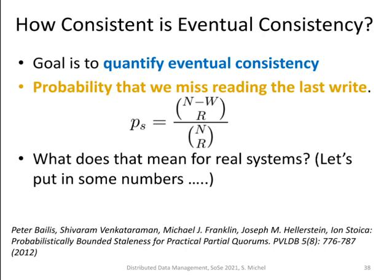Eventual consistency says that there is a certain amount of time before all the writes have been conducted at the individual nodes, and there's a risk that we are reading from nodes that do not have the most recent write. A 2012 paper tried to quantify the chances that we will miss one of the last writes. We have N nodes, and we are reading from R, where W is the number of writes that need to be acknowledged before the client gets confirmation the write was successful.